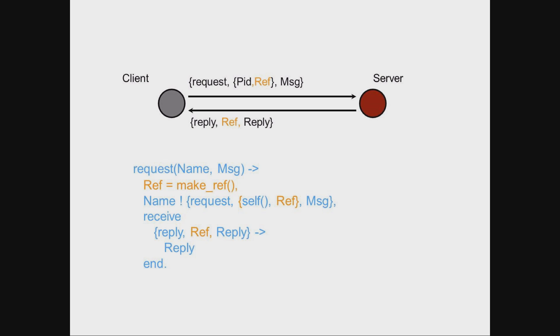We address this issue with unique references. The built-in function make_ref returns a unique reference used to tag a message and identify its reply. We bind that reference to a value and send it off to the server, and the server tags its reply with that reference.